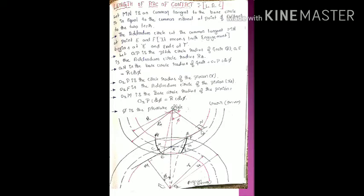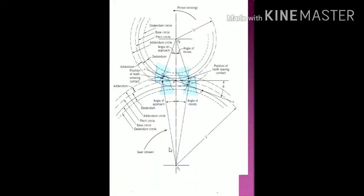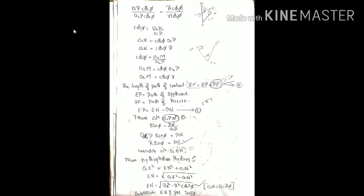EP = EN − PN. We can observe: EN minus PN gives the EP length. This is equation number one. This is equation number two. They now consider triangle O1PN.